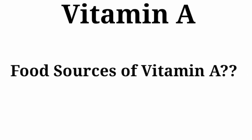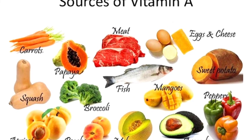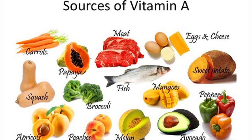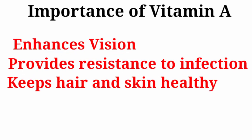Now let us discuss deficiency of different vitamins. First, vitamin A. The main food sources of vitamin A are yellow and orange colored fruits such as papaya and mango, green leafy vegetables, and fish liver oil. Vitamin A helps to enhance vision, provides resistance to infection, and keeps hair and skin healthy.